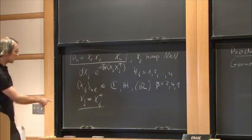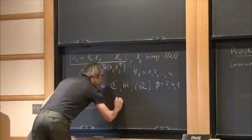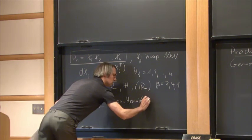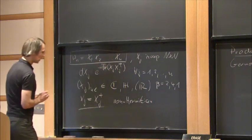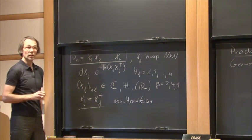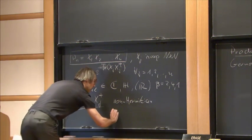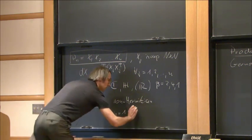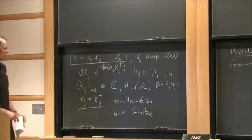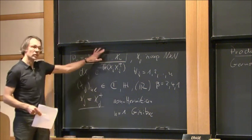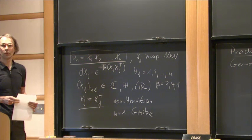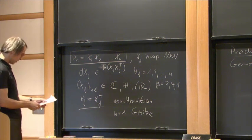Clearly the matrices are non-Hermitian. If I would just take a single matrix rather than a whole product, this would have a name attached to Jean Ginibre, who wrote down all three ensembles of random matrices with a single matrix in 1965.